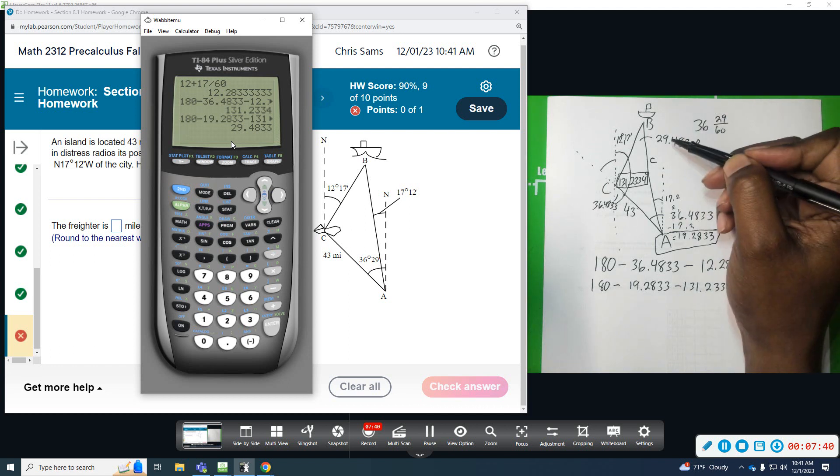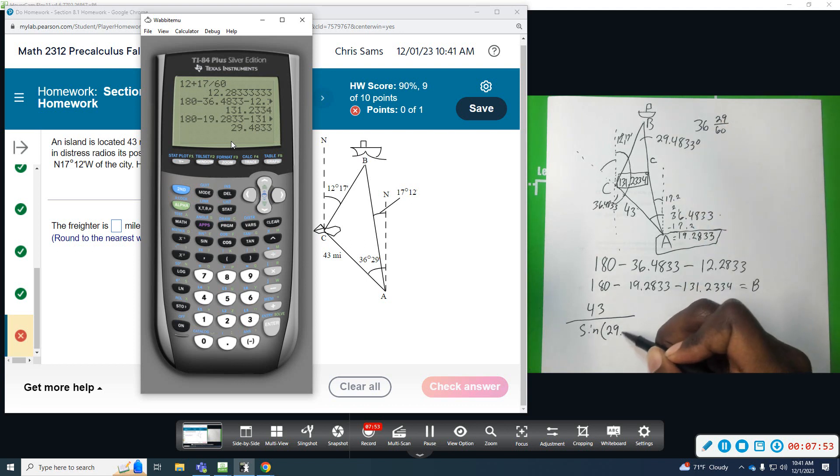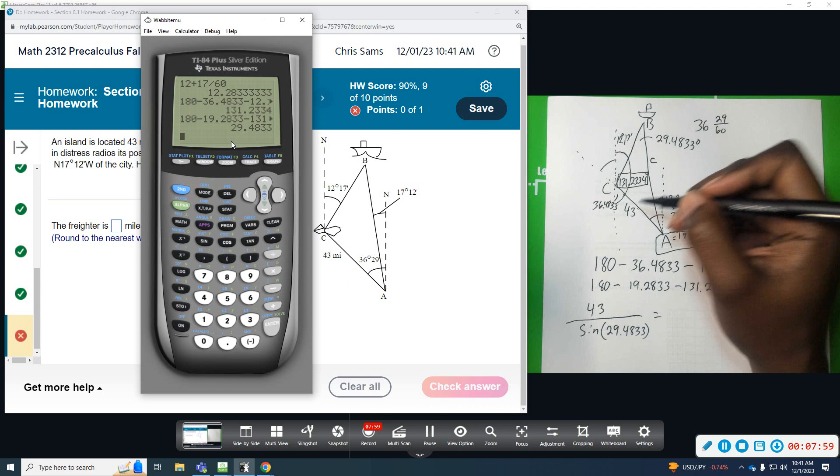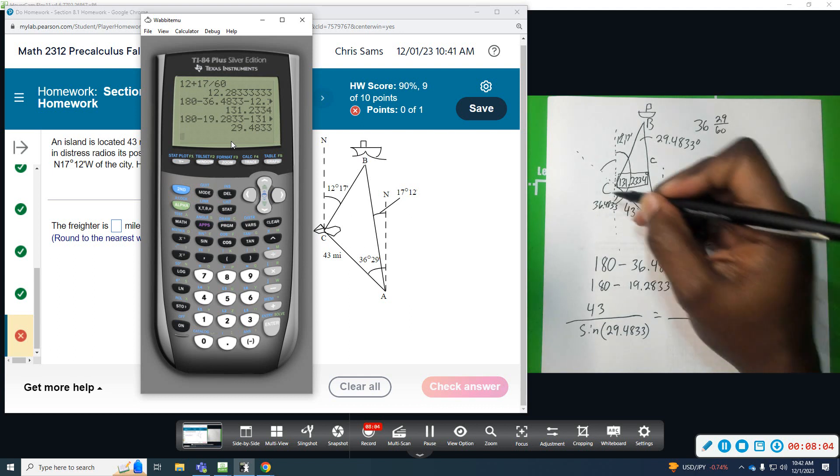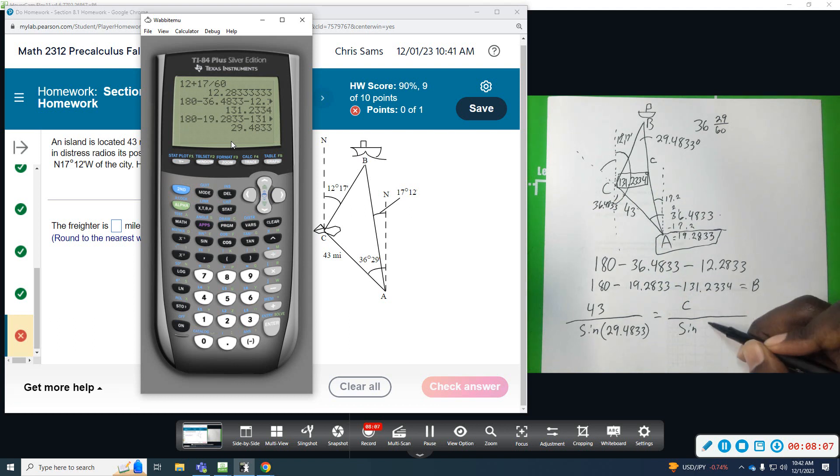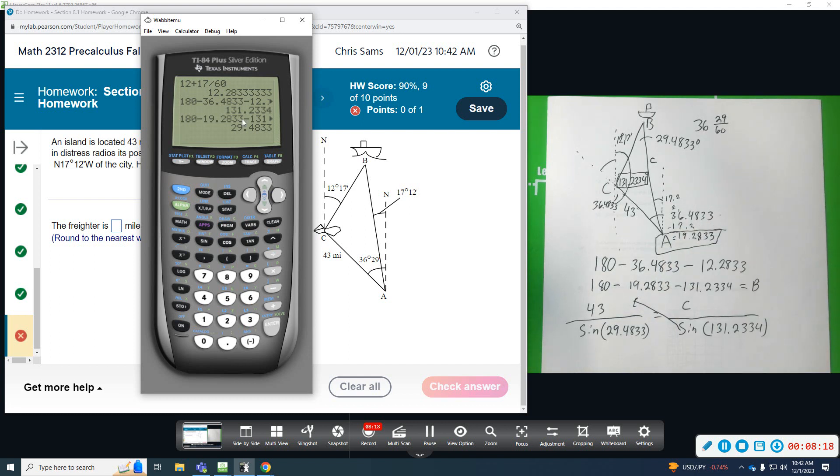Okay, so I have angle B, side B, so I can set up law of sines. 43 over sine of angle B, which we just figured out was 29.4833, and that's going to be equal to side C over sine C. So side C, that's what I'm trying to figure out, sine C, sine of 131.2334. And we're just going to cross multiply here, and that will give us our answer.